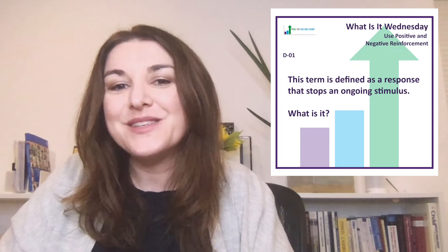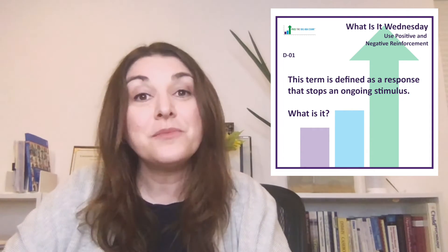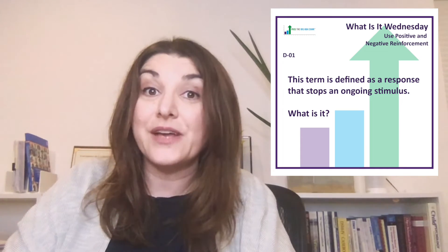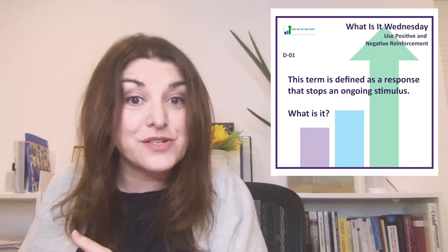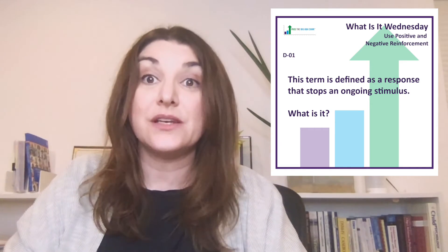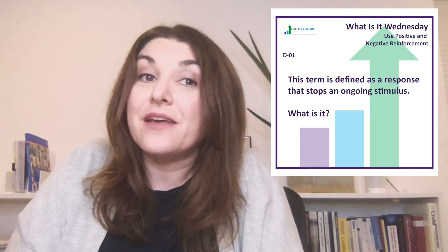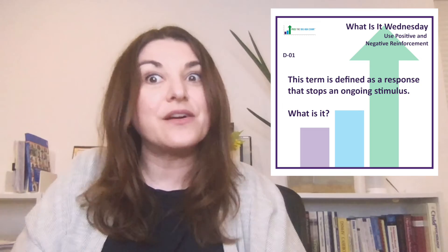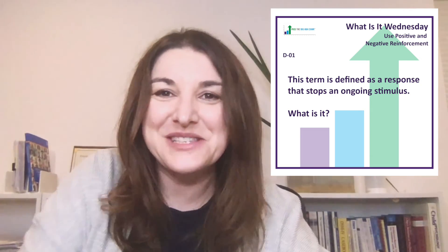There are two types of avoidance: discriminated avoidance and free operant avoidance. Discriminated means there's a signal that lets you know that avoidant behavior can result in negative reinforcement — meaning avoiding some aversive stimulus. Free operant avoidance is when there is no signal, so you're free to engage in avoidant behavior without something telling you that avoidance will result in avoiding that aversive stimulus.